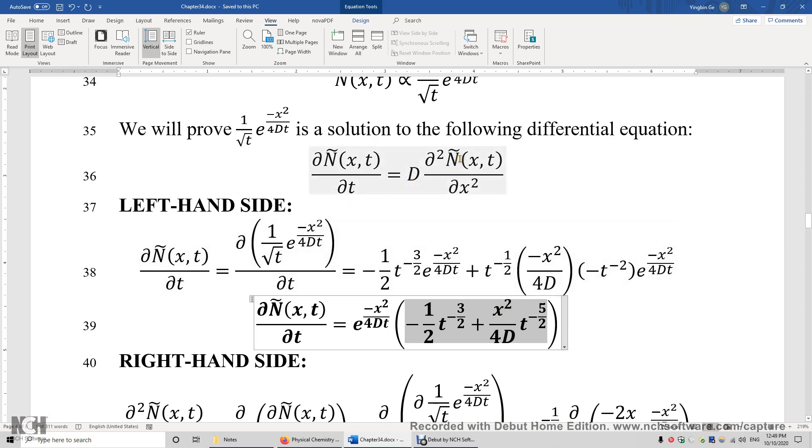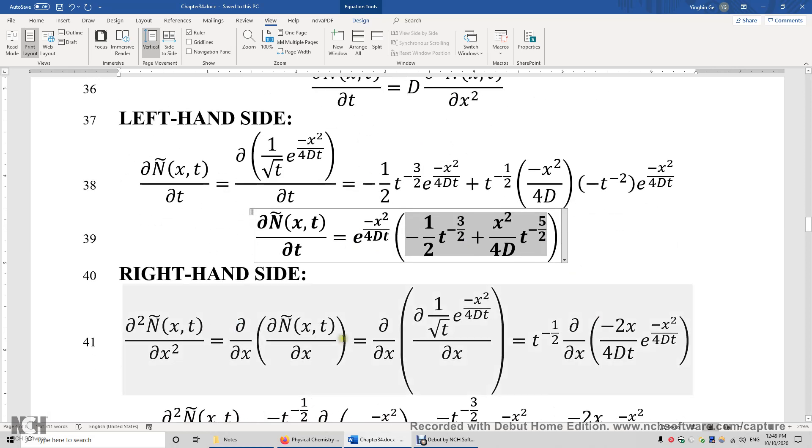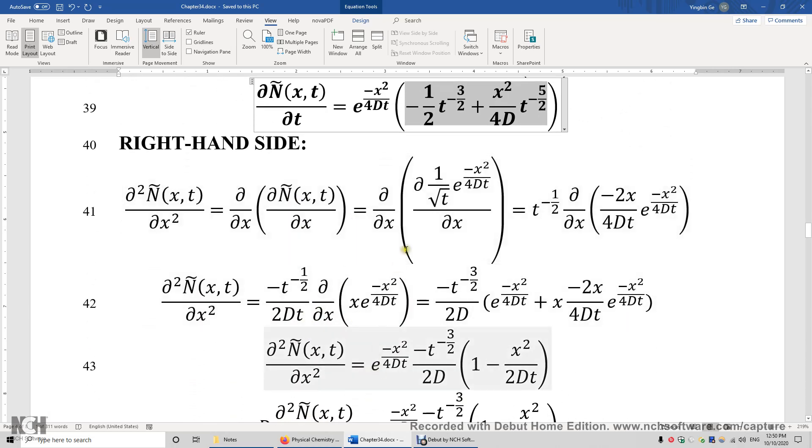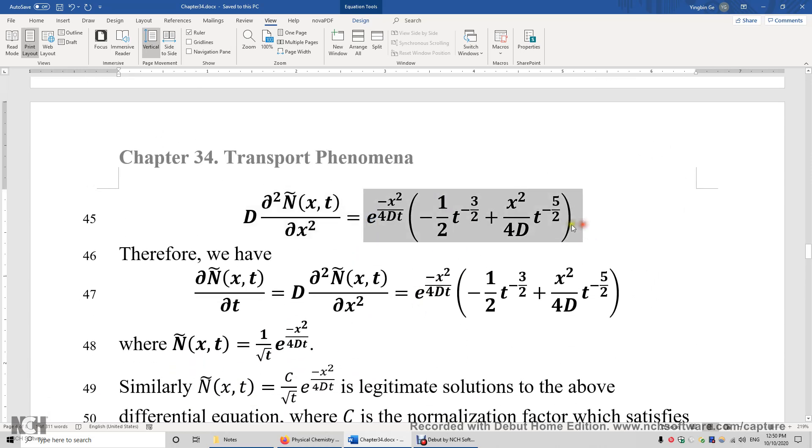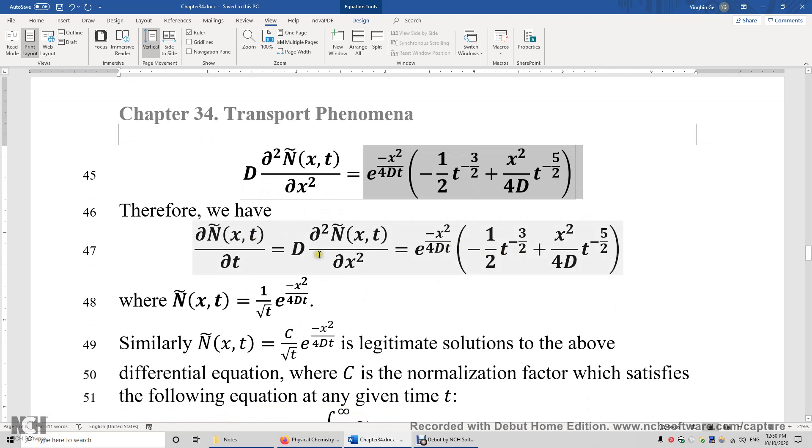And then we plug in this equation in the right-hand side. Similarly, we just need to take derivatives. This time, we need to take the second derivative of the number density of the particles with respect to x. The steps can be more tedious, but in the end, we get the same result. So we just proved that this is equal to this when ṅ is this, and this is a legitimate solution to this differential equation.